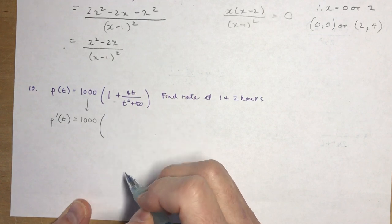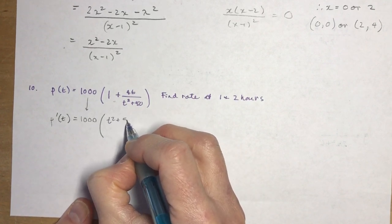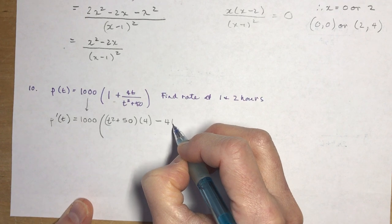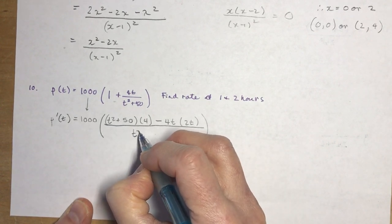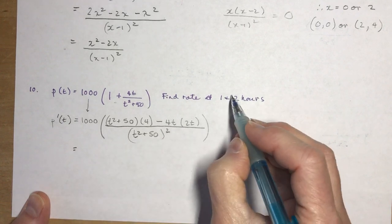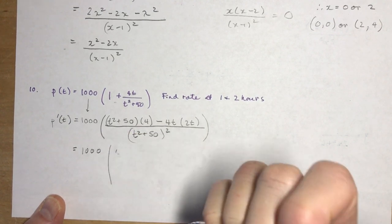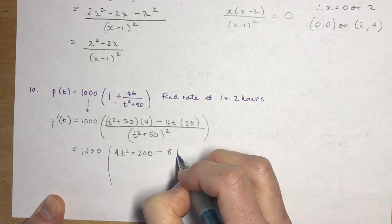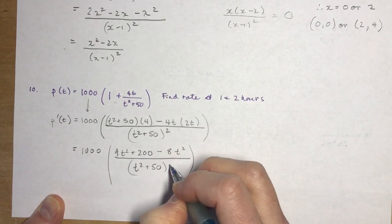The derivative P'(t). If you're taking the derivative, it's the same thing as the constant times the derivative of the function. I'm going to leave this constant 1000 out front and take the derivative of the rest. The derivative of 1 is 0, and the derivative of this fraction is a quotient rule. Ho d-hi minus high d-ho all over ho squared.